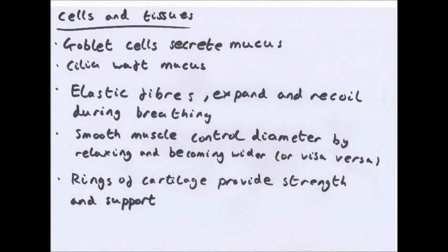Rings of cartilage in the trachea have a very similar effect to lignin in xylem vessels in plants. Cartilage provides strength and support and prevents collapse of the airways — when air pressure decreases, it stops them collapsing. However, it doesn't form a complete ring; it forms a C-shape, which allows a bit more flexibility.